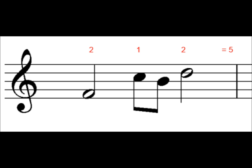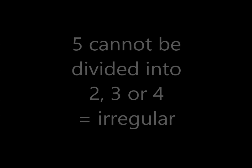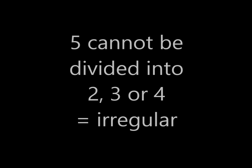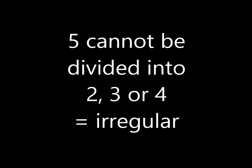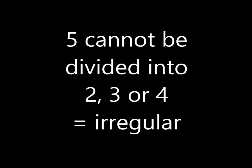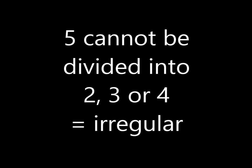So if we count up the crotchet beats here, we've got a minim which is worth two, we've got two quavers which is worth one, and then another minim, so that makes a total of five crotchets worth. Since we can't divide five up into two, three or four and get a whole number as the answer, this means the time signature here must be irregular.